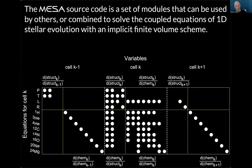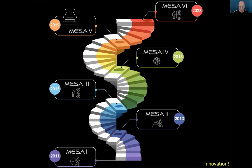That is the most technical I'm going to get in this talk on the MESA source code. The MESA source code itself has been described in six articles, starting in 2011: MESA 1 in 2011, MESA 2 in 2013, MESA 3 in 2015, MESA 4 in 2018, MESA 5 in 2019, and new for 2023 is MESA 6. I just got the proofs about two days ago, and that should be published very soon.